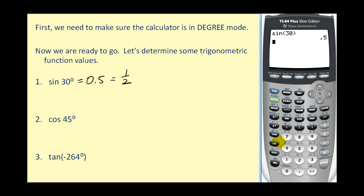If we want the cosine of 45 degrees, press the cosine key, 45, close it, press enter. And you can see here that this is an irrational value. It's actually the square root of two over two, but in decimal form it's approximately 0.7071.